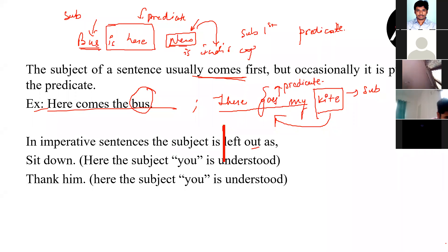'Prady sir is explaining verbal class' — in this, Prady sir is the subject, yes. 'Keep quiet, won't you?' — which type of sentence is that? That's going to be an interrogative sentence because you are questioning him.